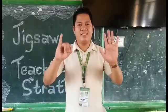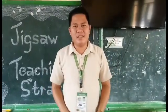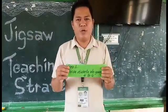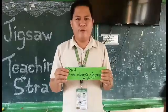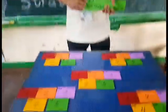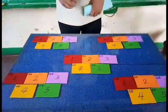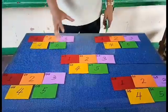There are six steps in the Jigsaw Pitching Strategy. In step number one, divide students into four to six groups. In my demonstration, there are five groups.